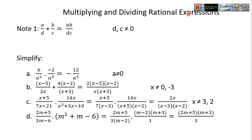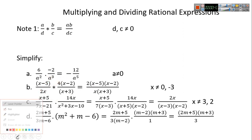The denominator cannot be 0. Here you have minus 12 over a^5 — you cannot simplify anything, a cannot be 0. In the next example, you can simplify 4 and 2, giving you 2. So the result is 2(x−5)(x−2) over (x+3), where x cannot be 0 and x cannot be −3.